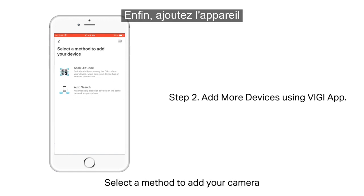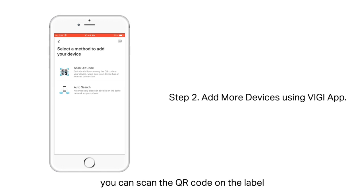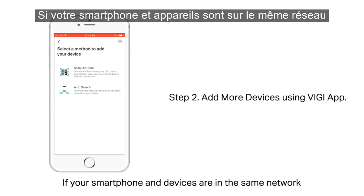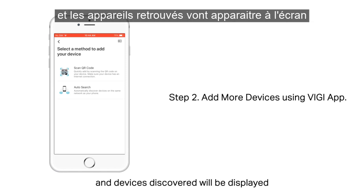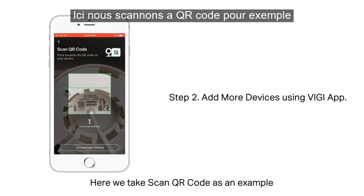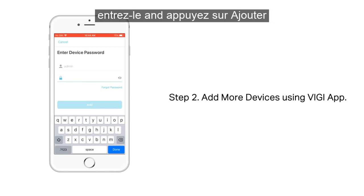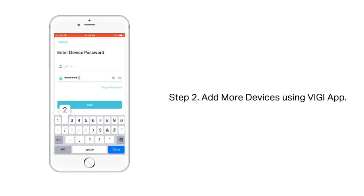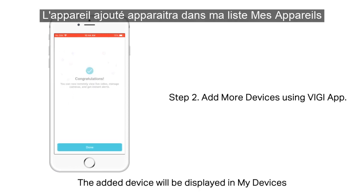Third, add the device. Select a method to add your camera. If your camera is in hand, you can scan the QR code on the label. If your smartphone and devices are in the same network, you can choose Auto Search and Devices Discovered will be displayed. Here we take Scan QR code as an example. If your device has a password, enter it and tap Add. The added device will be displayed in My Devices.